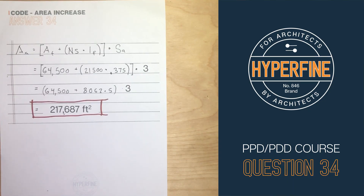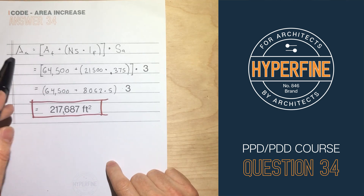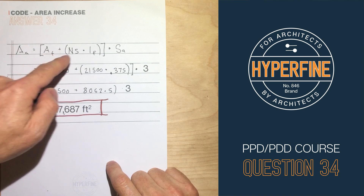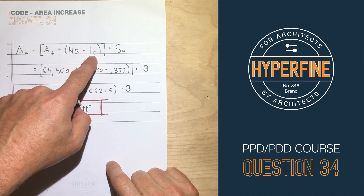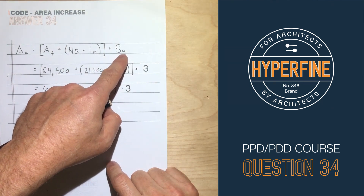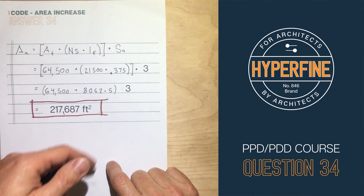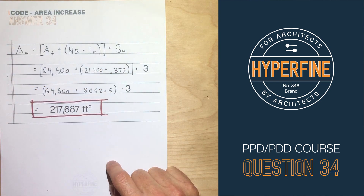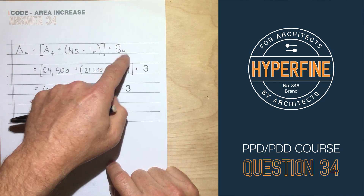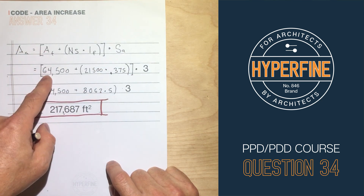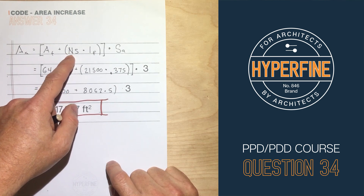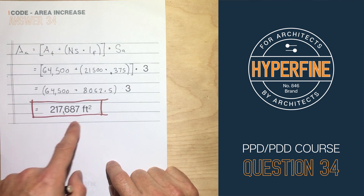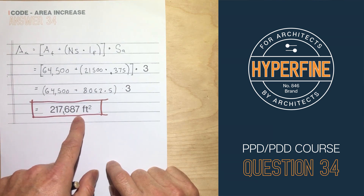Let's go through all the math for finding the allowable area. This is Equation 5-2 from Section 506.2.3. The allowable area equals our tabular area plus our non-sprinkler tabular area multiplied by the frontage increase factor, and multiply that whole thing by the actual number of stories up to a maximum of 3. Our tabular area was 64,500, our non-sprinkler tabular area was 21,500, and our frontage increase works out to be 0.375 — we'll go through all of that in a minute. Multiplying it all out, the answer is 217,687 square feet.